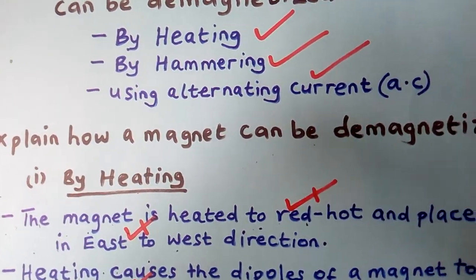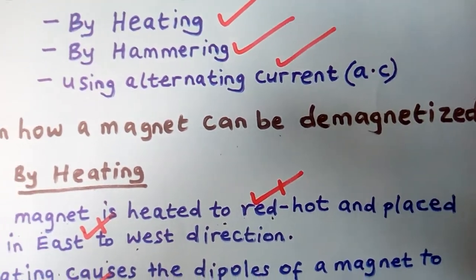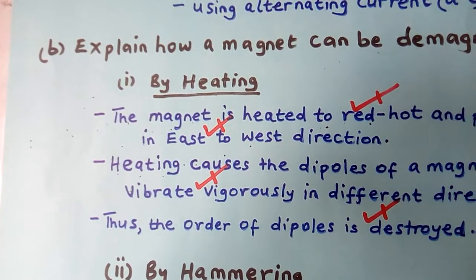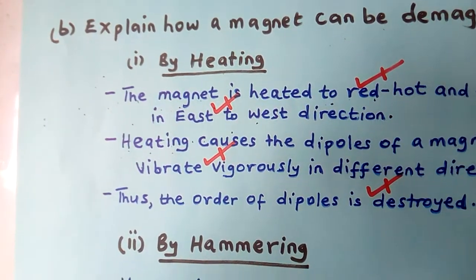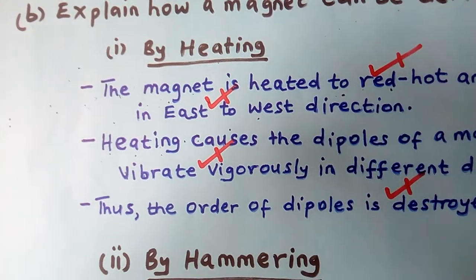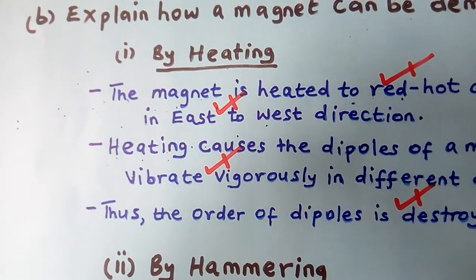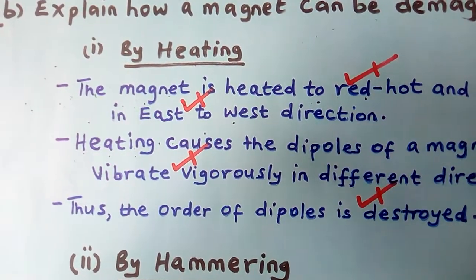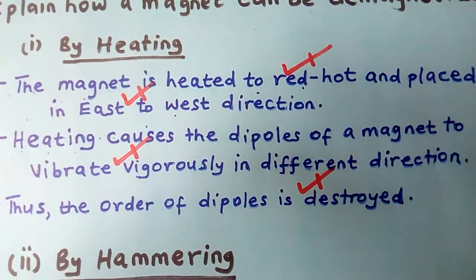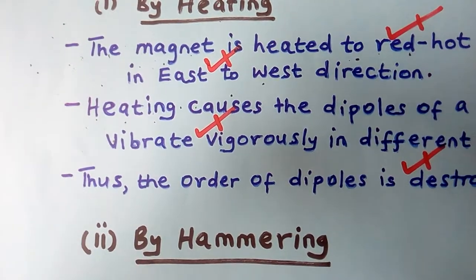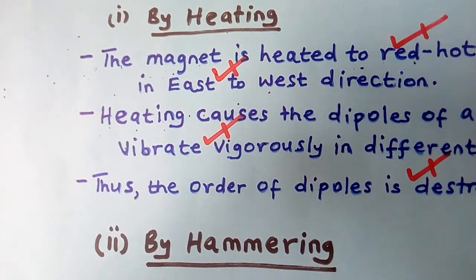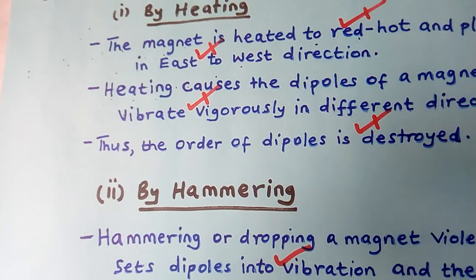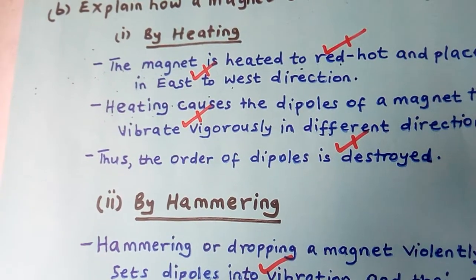Explain how a magnet can be demagnetized using the three ways. Starting with heating — is it true that when you heat a magnet it loses magnetism? Yes. If you want to use the approach of heating, you get your magnet, put it in a fire, and heat it until it becomes really hot. Then you place it in an east-to-west direction. Heat will always affect the arrangement of the dipoles. Remember, in a magnet all the dipoles are facing the same direction.